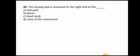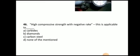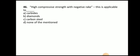Next question: the chasing dial is mounted on the right end of what? The answer is the apron. Next question: high compressive strength with negative rake angle — this is applicable to which tool material? The answer is carbide. High compressive strength and negative rake angle is provided on carbide tools.